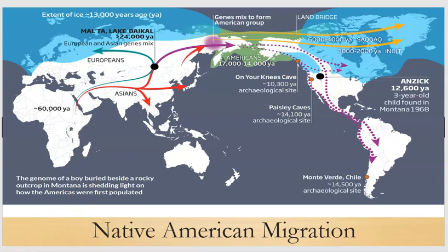One problem with this particular theory, however, is that we don't have any archaeological evidence to support it. This is a very logical explanation of why humans will have crossed over from Asia into the Americas, but we have not yet actually found any of this evidence. The reason is that as the ice has melted, the seas have risen again, and most of the areas where humans would have stopped along their way into North America are now covered by water.